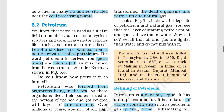Now we will talk about petroleum. Heavy vehicles like trucks and tractors all run on diesel or petrol. Petrol and diesel are obtained from a natural resource called petroleum. The word comes from 'petra' meaning rock and 'oleum' meaning oil — so petroleum is the oil we get from rock.